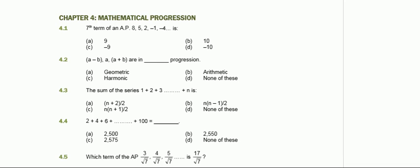In question 4.1, we have to find the seventh term of an arithmetic progression. We are given the first term which is 8, and the common difference, which is 5 minus 8. For an arithmetic progression, the common difference is the second minus the first term, which gives minus 3.